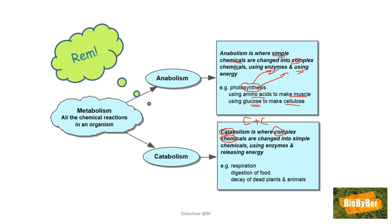Examples of catabolic reactions are respiration, where glucose is broken down to release energy from food, producing the simple chemicals carbon dioxide and water — you can see clearly how respiration illustrates a catabolic reaction. Digestion of food follows the same idea: breaking down complicated biomolecules into simple sub-units like glucose units, fatty acids and glycerol, or amino acids. And decay of dead plants and animals is another catabolic reaction.